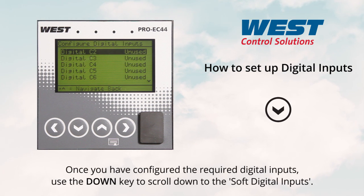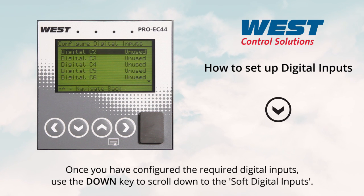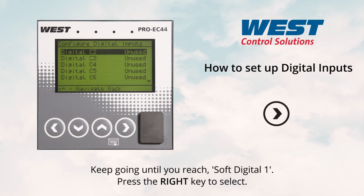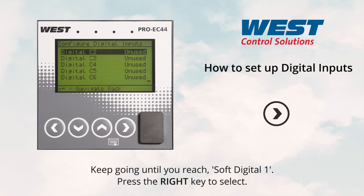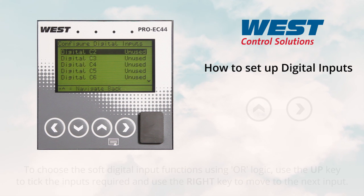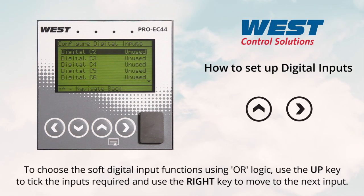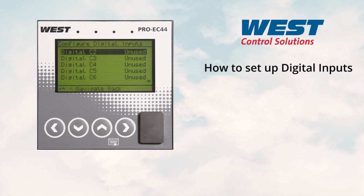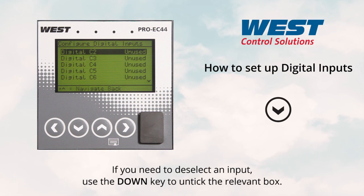Once you have configured the required digital inputs, use the down key to scroll to the soft digital inputs. Keep going until you reach soft digital input 1, then press the right key to select. To choose the soft digital input functions using OR logic, use the up key to tick the inputs required and use the right key to move to the next input. If you need to deselect an input, use the down key to untick the relevant box.